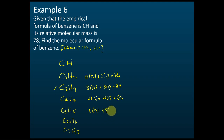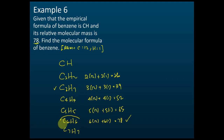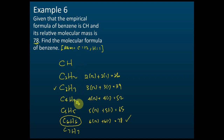We found that C6H6 gives a relative molecular mass of 78, which matches the given value. Because we know the relative molecular mass, we can identify the correct molecular formula. The molecular formula of benzene is C6H6.